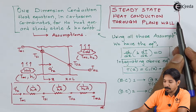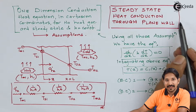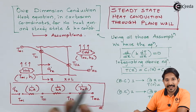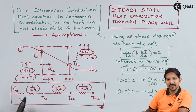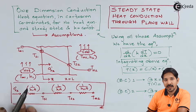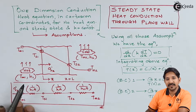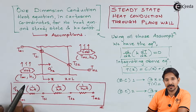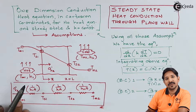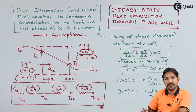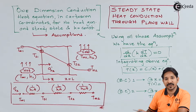Steady state heat conduction through plane wall. We have seen previously how to derive the two general forms of equation for Cartesian and polar coordinates. After that, with a set of assumptions, we have seen how to derive those general equations into the specific equations.